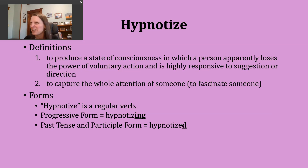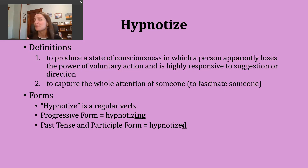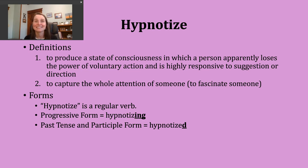The past tense and participle forms can be made by just adding -d since this verb already ends in e. Our base verb hypnotize ends with a voiced sound — that z sound is voiced in English. This means the -ed ending just makes a d sound and doesn't add an extra syllable. So the past tense and participle form sounds like this: hypnotized.